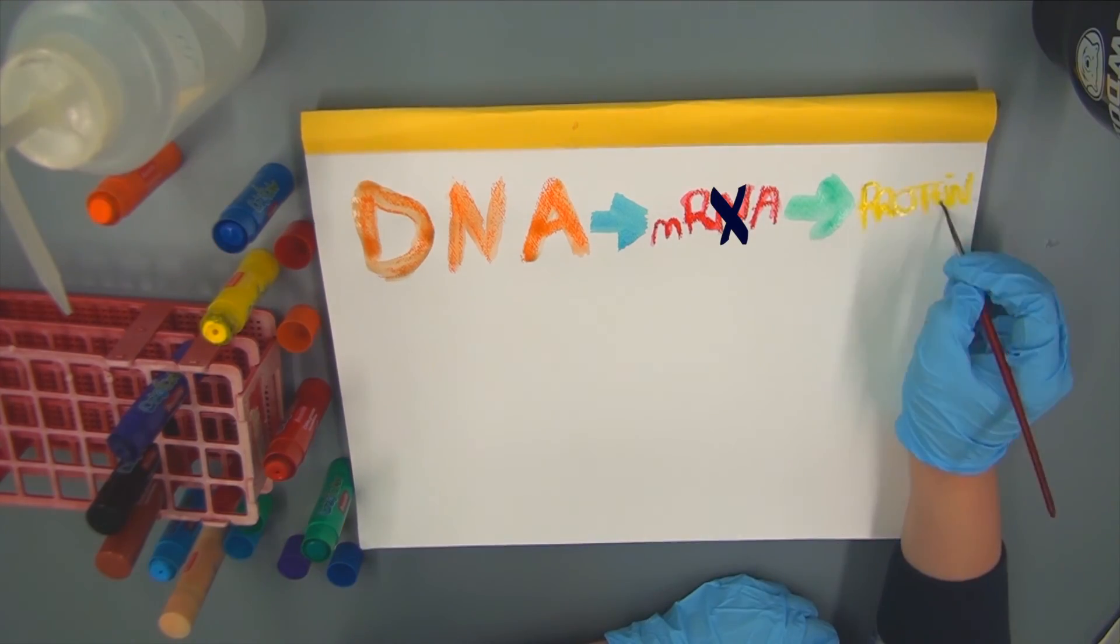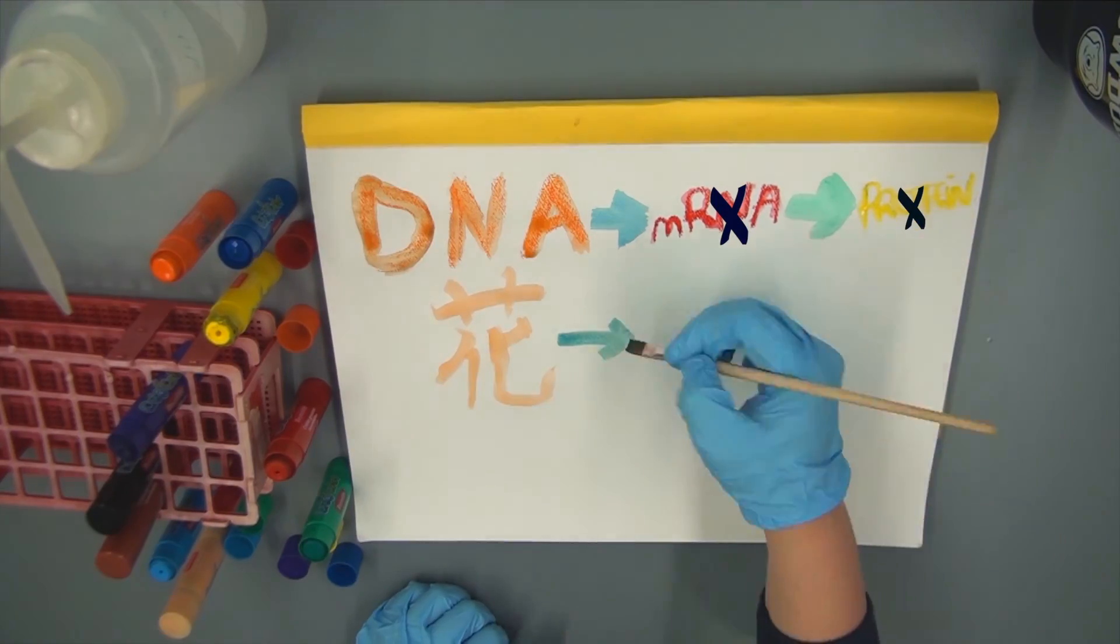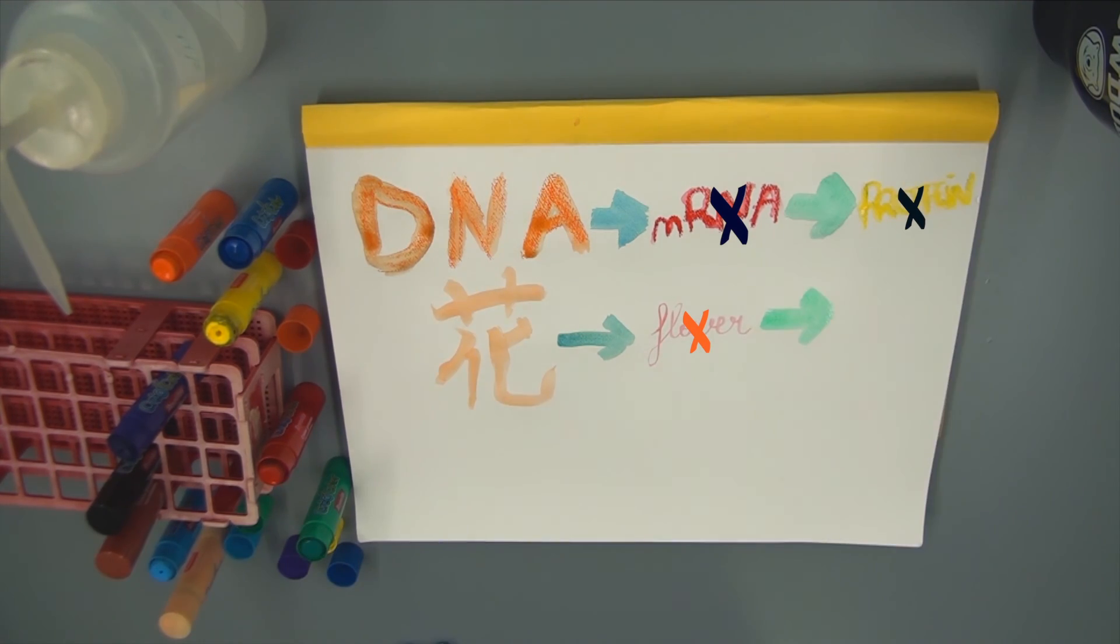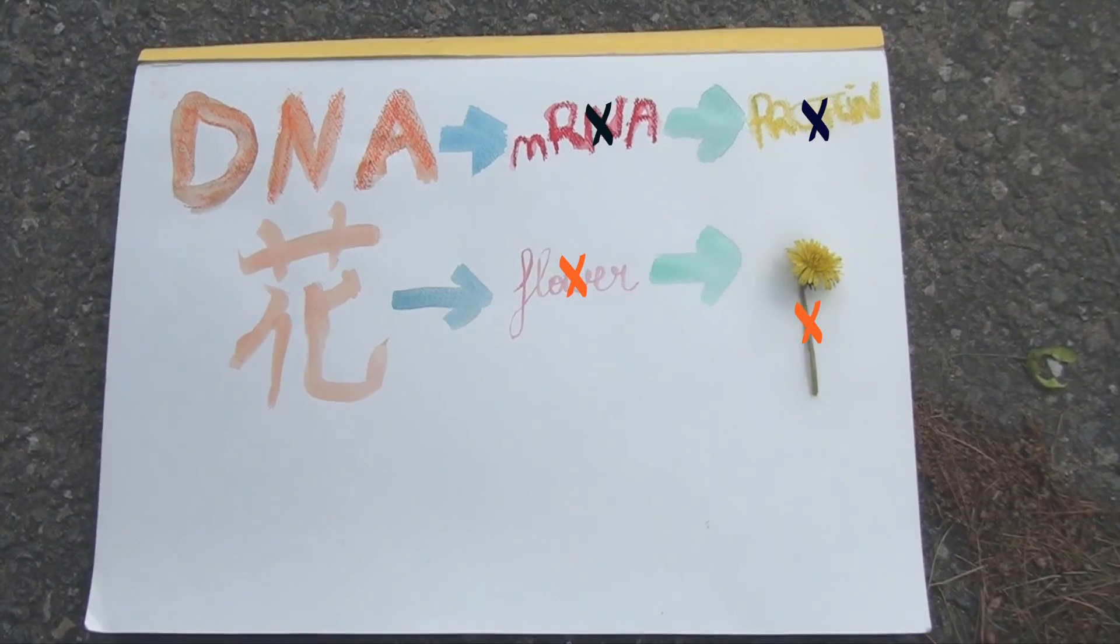Because there is no mRNA to translate, no protein coded by that mRNA is produced. Because the transcribed instruction to create a flower is destroyed, no flower is produced.